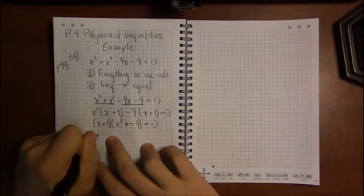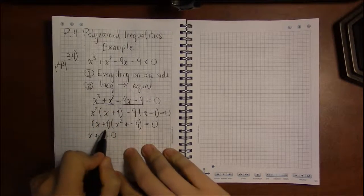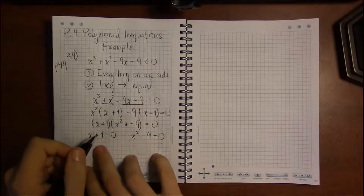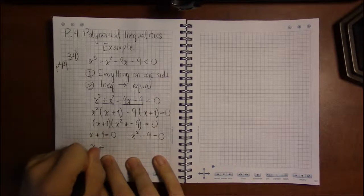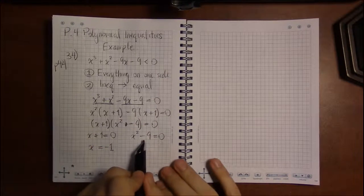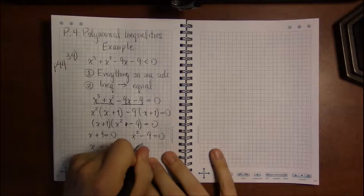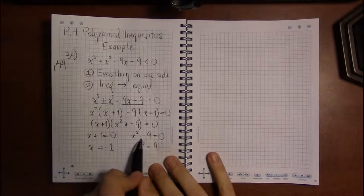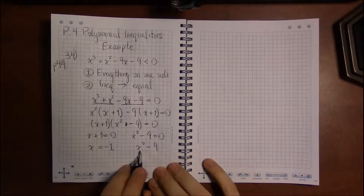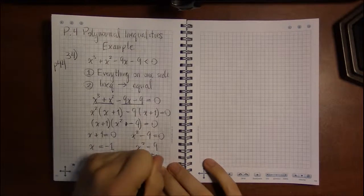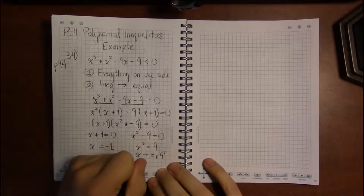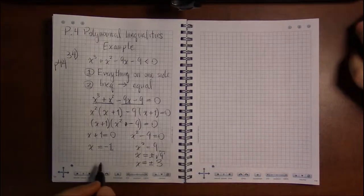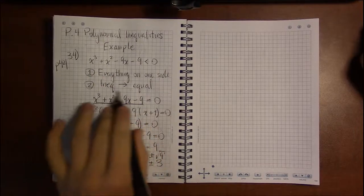With a product of two things equal to zero, either x plus one equals zero, or x squared minus nine equals zero. For x plus one equals zero, subtracting one gives x equals minus one. For x squared minus nine equals zero, we add nine to both sides and take square roots, giving plus or minus the square root of nine, which is plus or minus three.